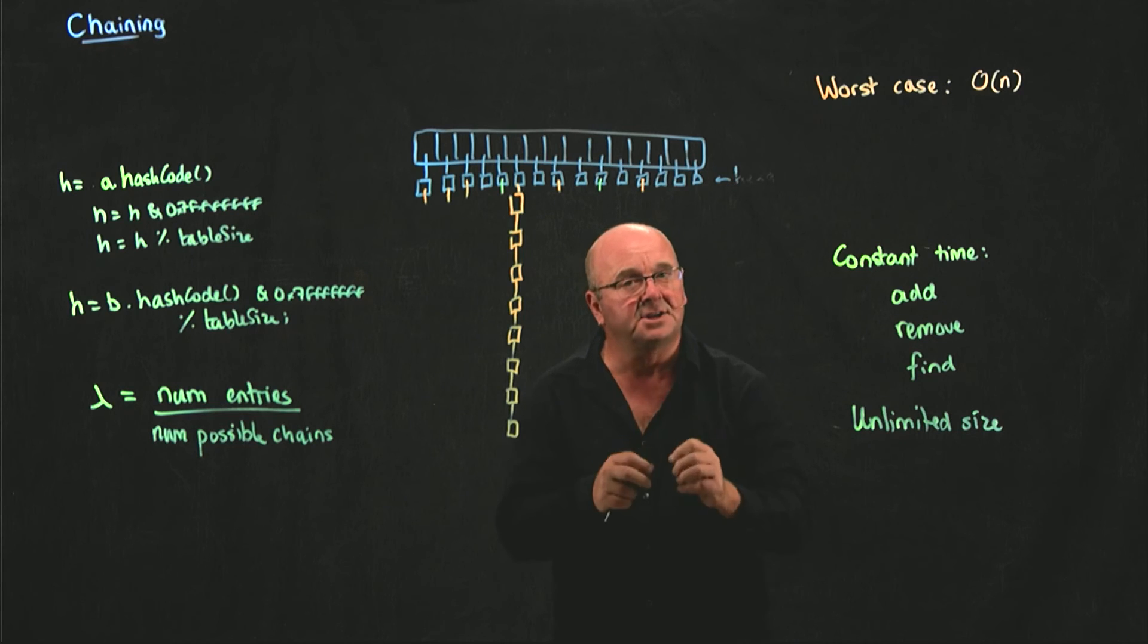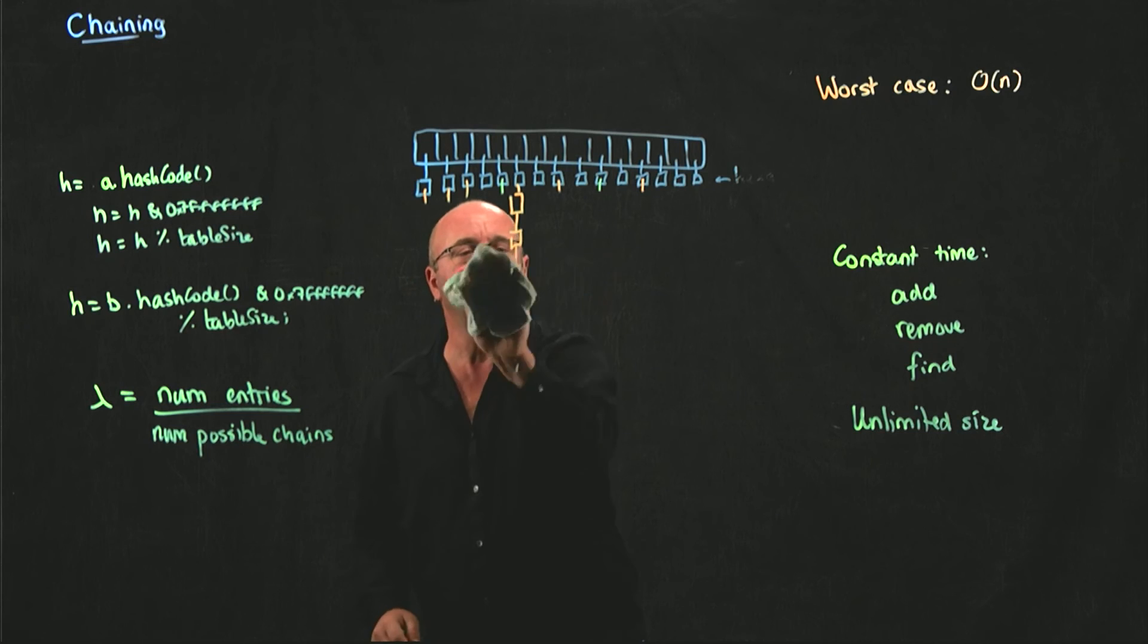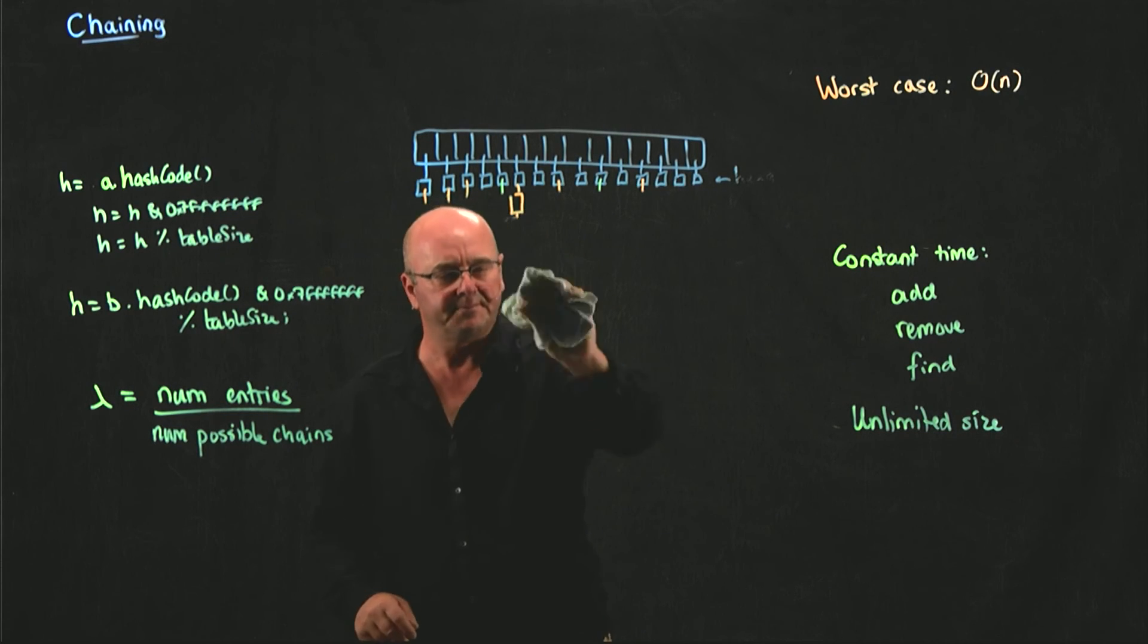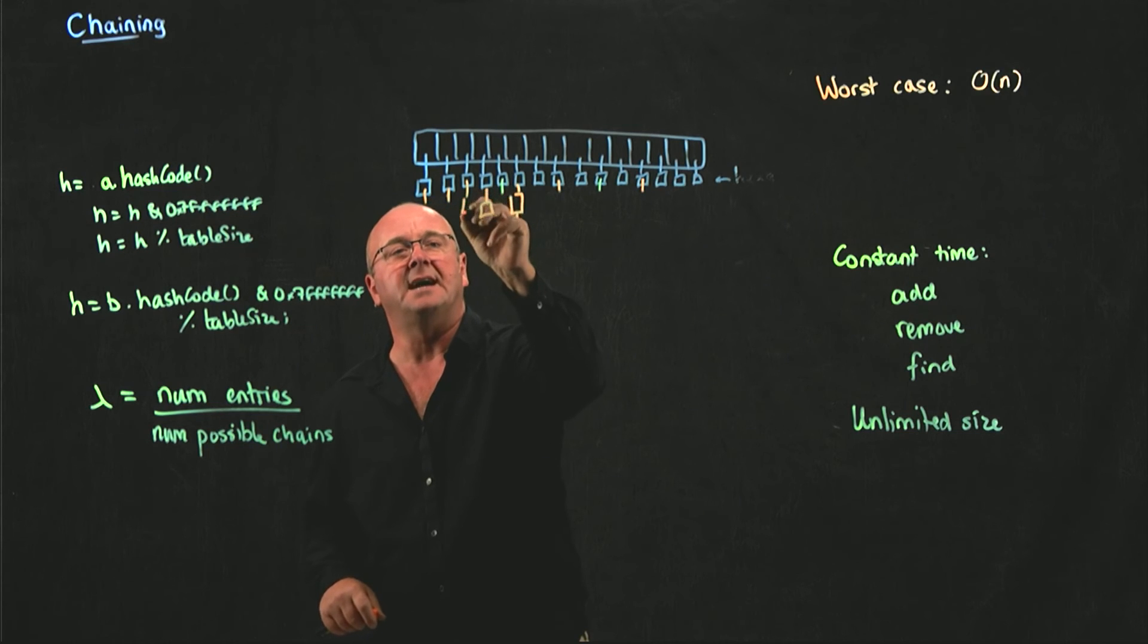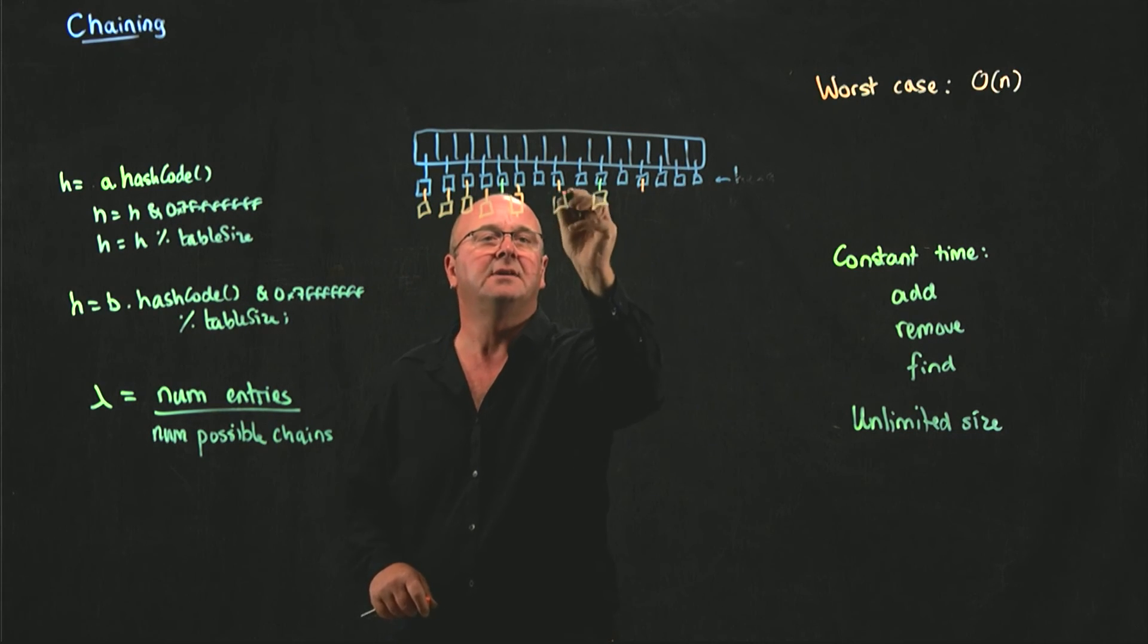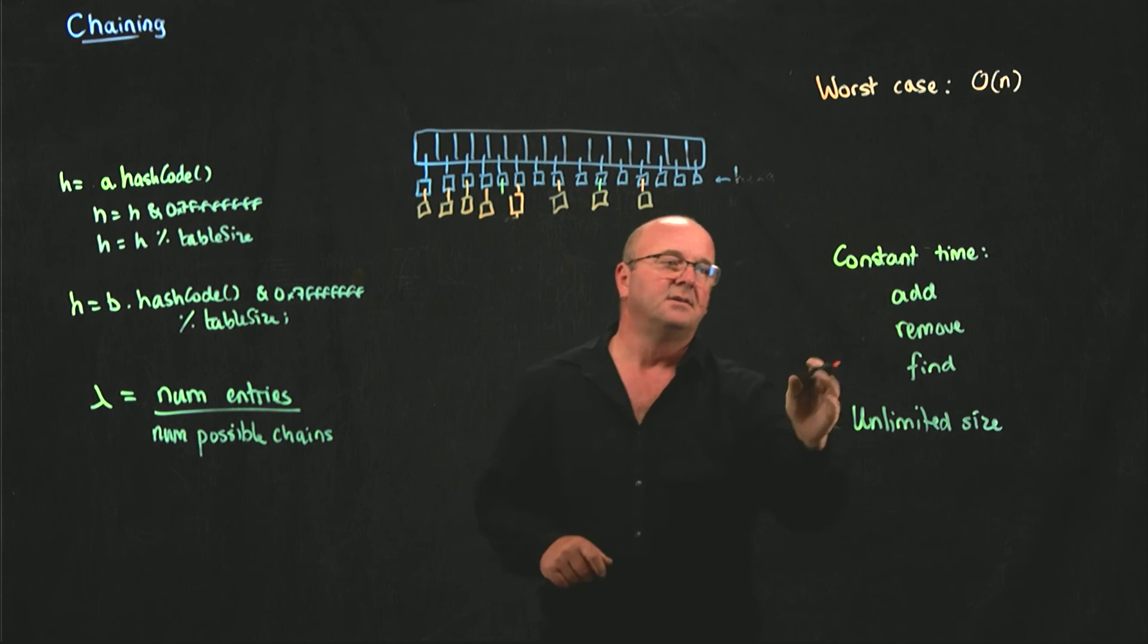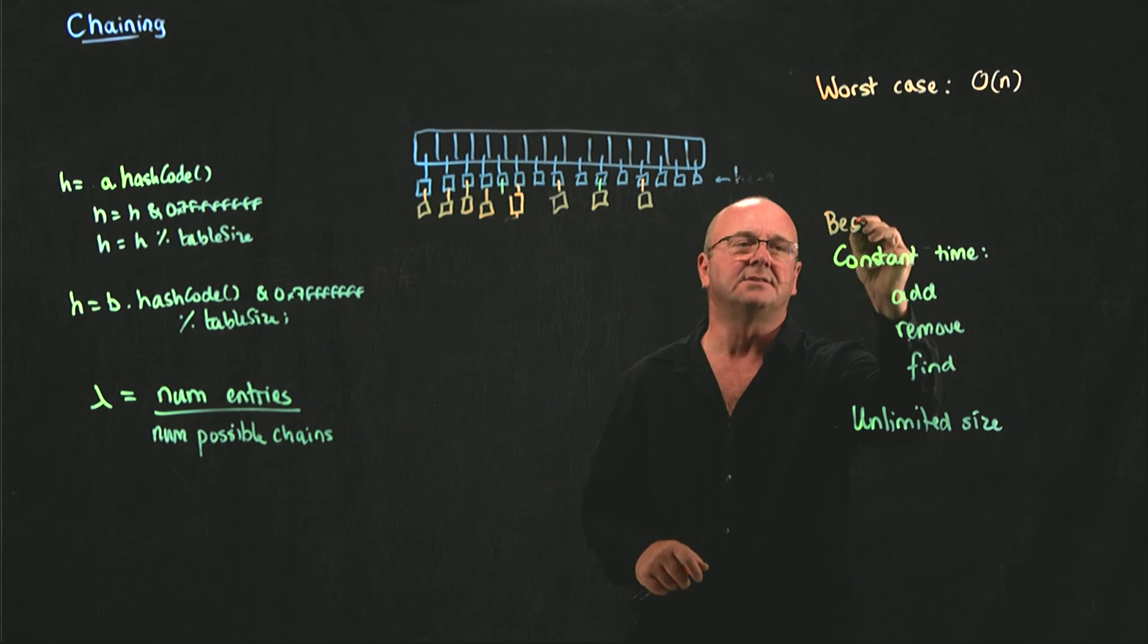If our hash code returns different number every time, then we get our best case for chaining. Which is that every time we add something, it goes in a different bucket. And now our time for finding things, for removing things, is constant time.